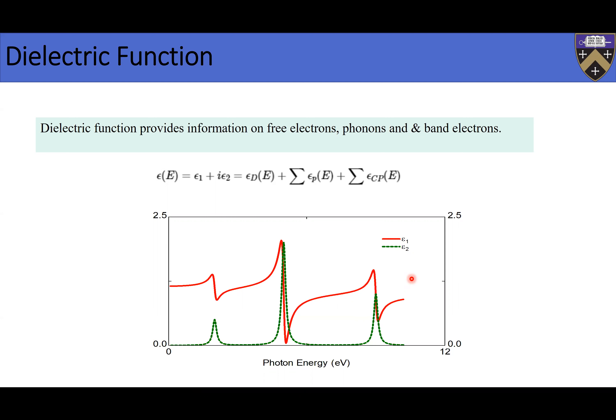Looking at the imaginary part — the one in green — you can see there are peaks in the dielectric function's imaginary part. These peaks correspond to transitions in your material: free electrons, phonons, and band electrons. So all the behavior of these electrons and phonons is stamped there. By further analysis of the dielectric function, you can get insights into the dispersion of phonons or the dispersion of electrons. That's the crucial thing about the dielectric function.